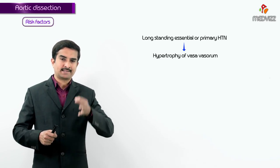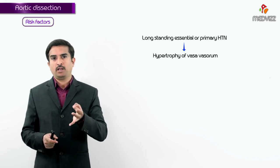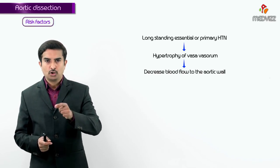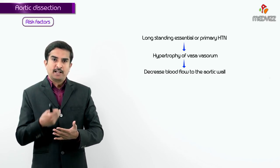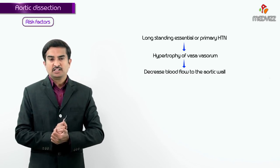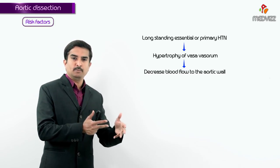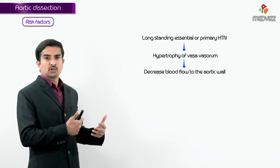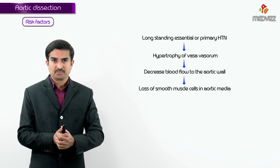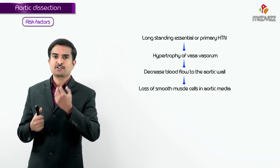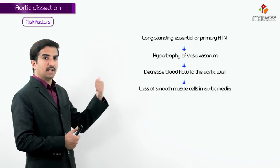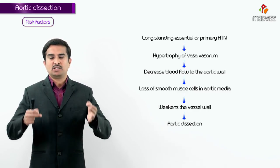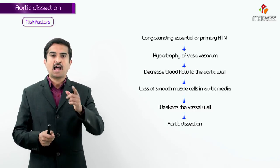In systemic or essential hypertension, there is hypertrophy of the vasa vasorum, which causes diminished blood flow to the aortic wall. Decreased blood supply leads to a decrease in cell size or cellular loss in the tissue, resulting in loss of smooth muscle cells in the aortic media. This loss of smooth muscle cells weakens the vessel wall — that is the pathogenesis behind hypertension-related aortic dissection.